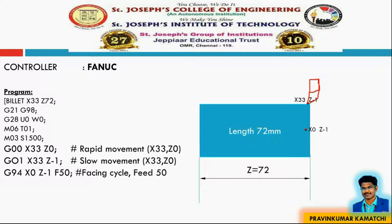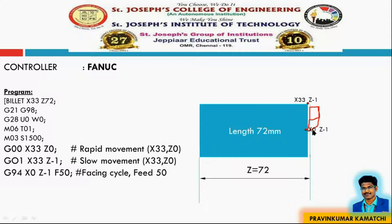The facing cycle code is G94 X0 Z minus 1 F50. X0 and Z minus 1 is the next position of our tool, and F50 is the feed. The tool moves to this position and removes material from the workpiece. Since it is a cylindrical workpiece, moving up to the axis is sufficient to perform the facing operation. After one facing pass the workpiece length becomes 71mm, but we need 70mm, so we give another depth of cut by moving Z to minus 2.